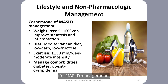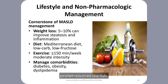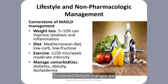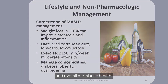The Mediterranean diet is specifically recommended within current guidelines for MASLD management. It is favored because it emphasizes consumption of fruits, vegetables, whole grains, nuts, legumes, olive oil, and lean protein sources like fish. Additionally, addressing comorbid conditions such as type 2 diabetes, dyslipidemia, and hypertension is critical. Sustained lifestyle changes are recommended as the cornerstone of MASLD treatment, given their proven impact on liver histology and overall metabolic health.